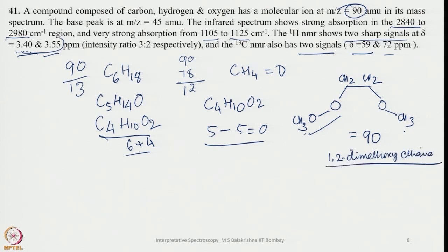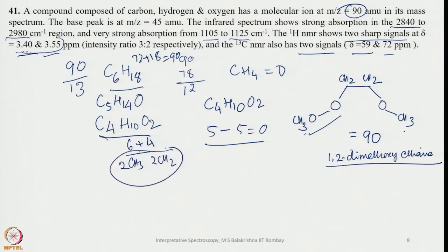To verify: from mass 90, dividing by 13 gives C6H18; adding reminder and quotient gives the total hydrogen count. Adding one oxygen gives C5H14O; adding one more gives C4H10O2. With 10 hydrogens in a 3:2 ratio, we can split into 6 and 4 — that is 2 CH3 and 2 CH2 units — which is consistent with 1,2-dimethoxyethane.